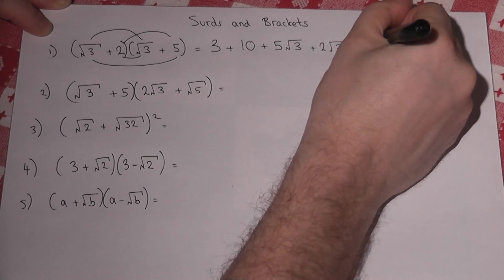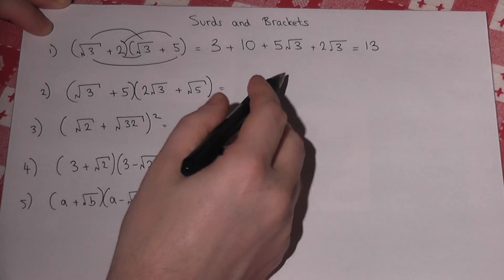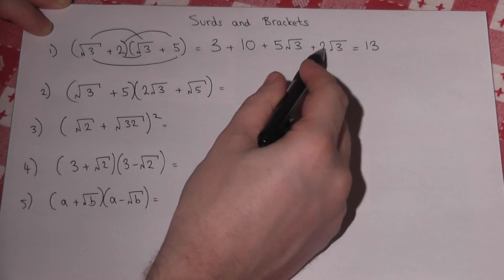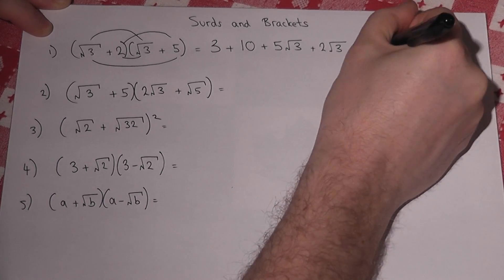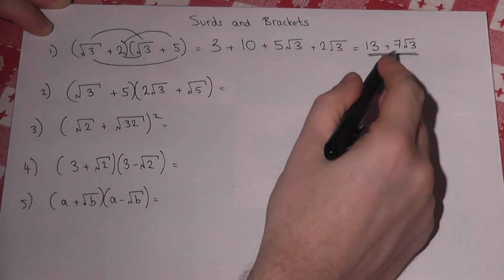3 plus 10 is 13, and 5 and 2 is 7, so 7 root 3. This cannot be made any simpler.